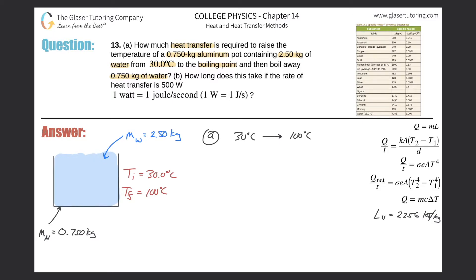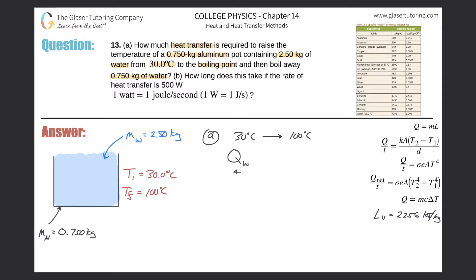Although the problem talks about the temperature change of water, you have to realize that the change in temperature of the water comes along with a change in temperature of the aluminum pot itself. You're not going to touch a pot on the stove after you heat it up because it gets hot. So I want to calculate the heat absorbed by the water and the heat energy required to take the aluminum from 30 to 100 degrees Celsius — independently.